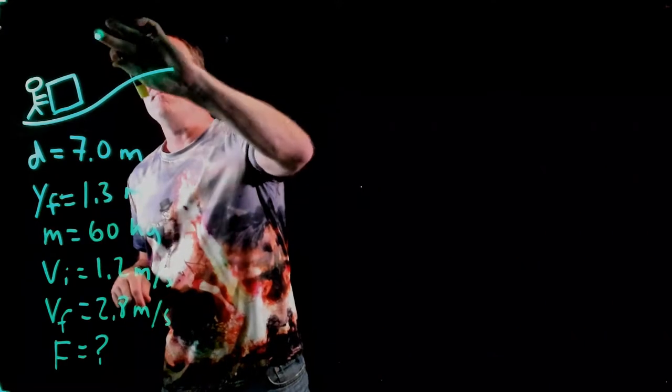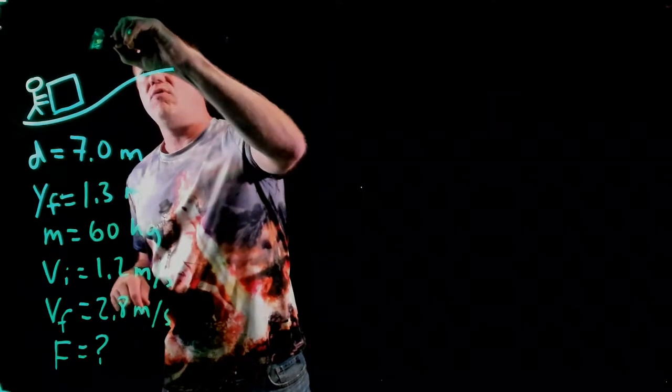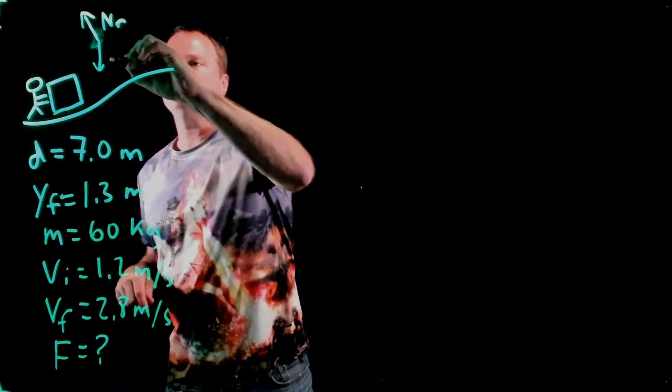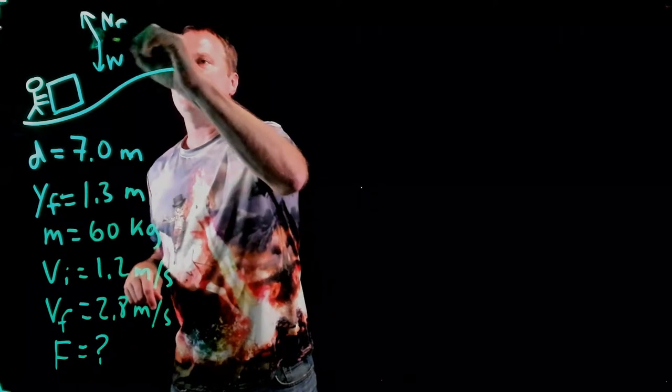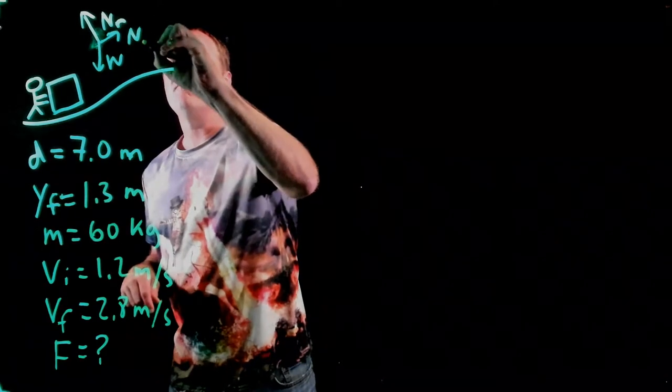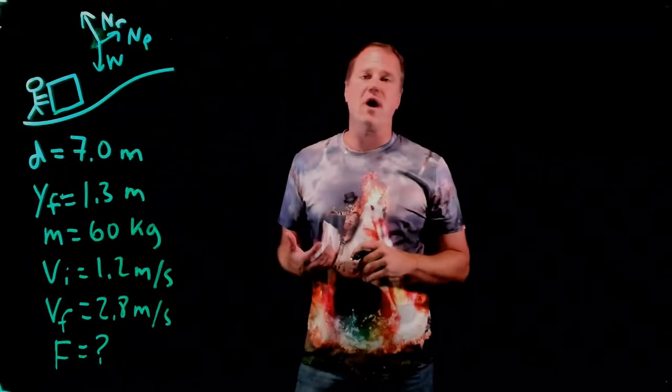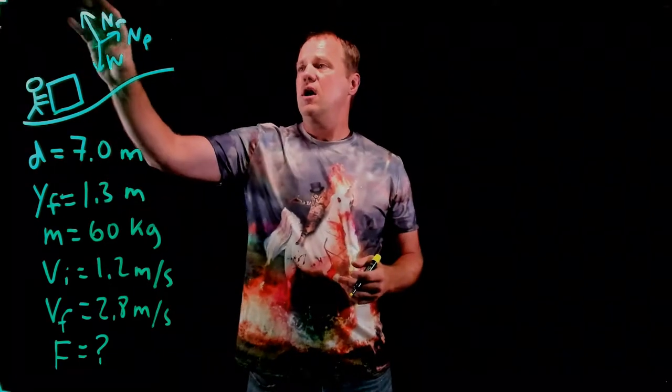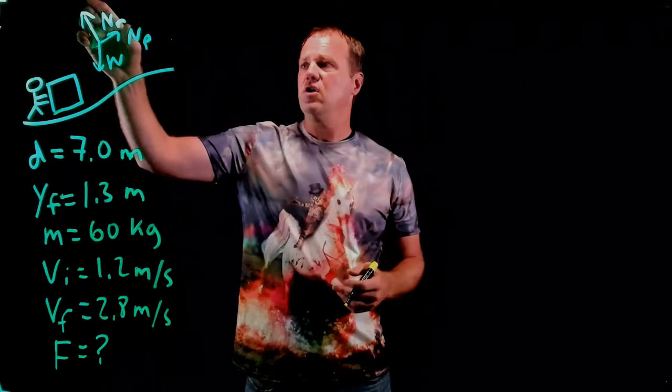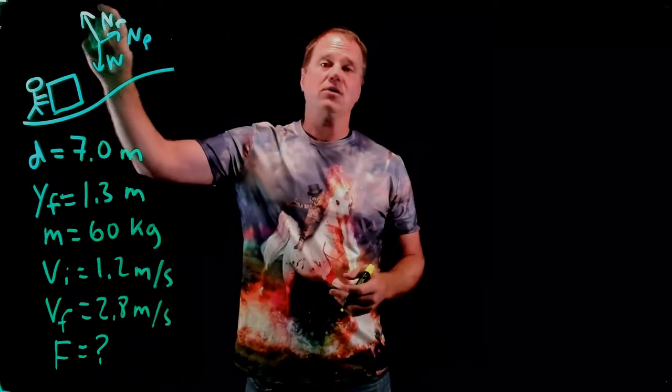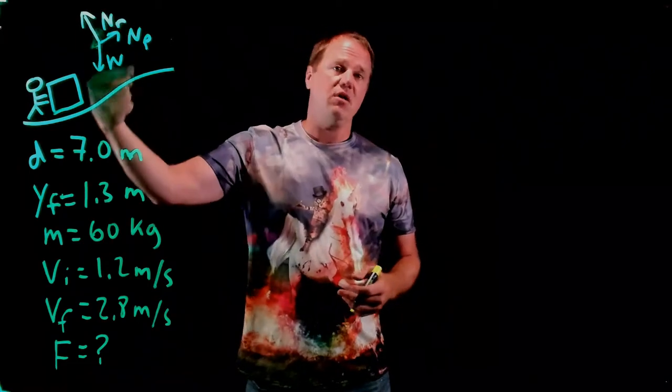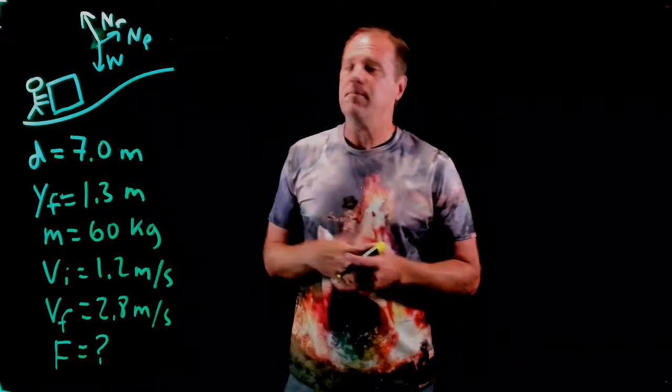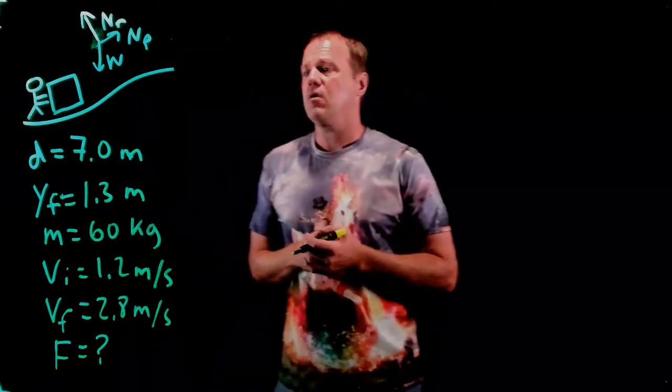We'd have a normal force up to the left from the ramp. We'd have a weight force straight down. And then we'd have a normal force from the person up to the right. Those are the three forces. The weight force is going to be constant. The normal force is going to vary in direction and magnitude, actually. And the normal force from the person is going to vary in direction as the block goes up this ramp.